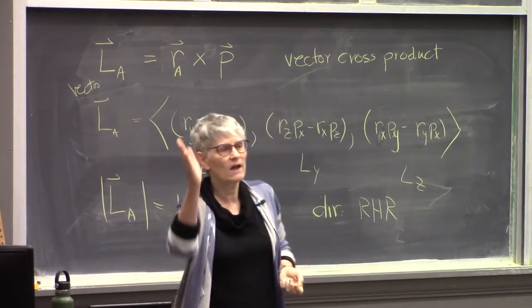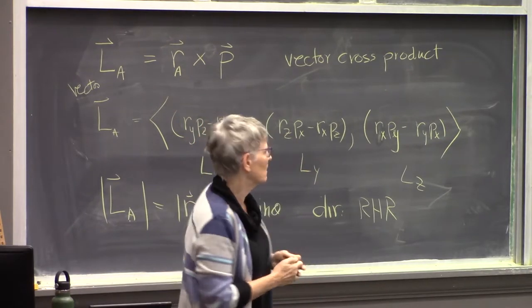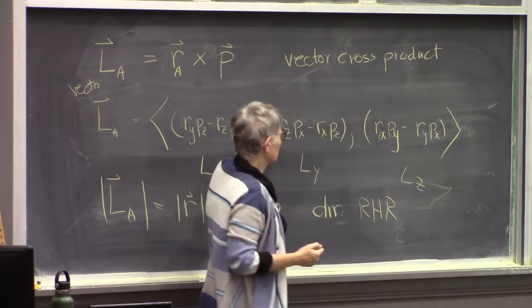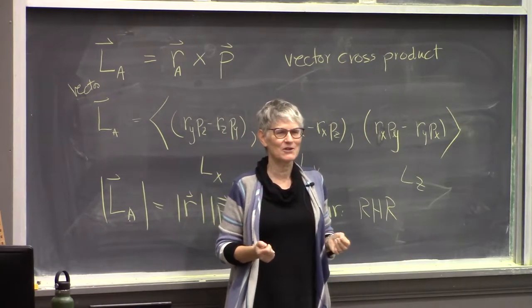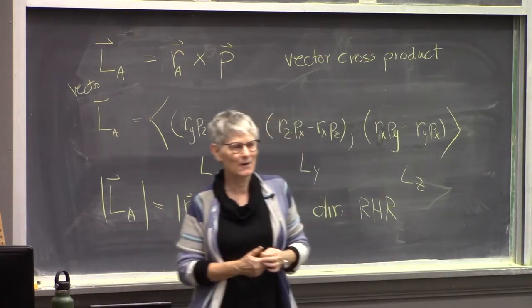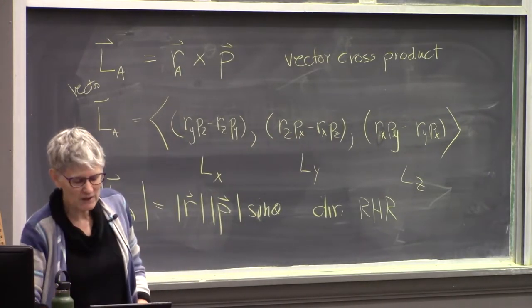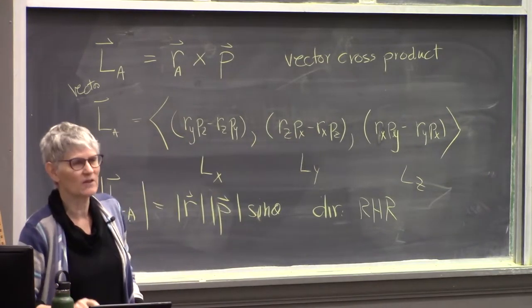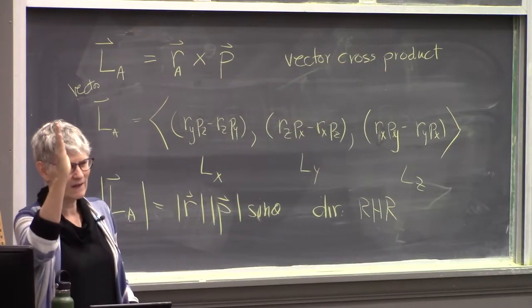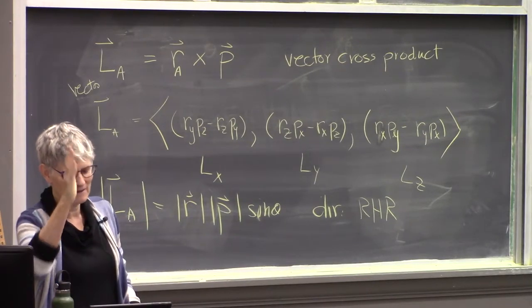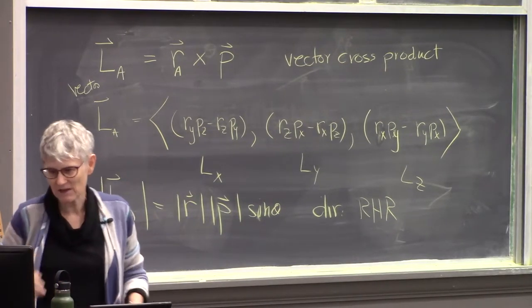Which method is easier depends on what information you have. If you have components, use the component formula. If you have magnitudes and angles, use the magnitude-sine-theta approach. Either way, you should always check the direction with the right-hand rule. Being willing to put your pencil down and use your right hand is actually important.